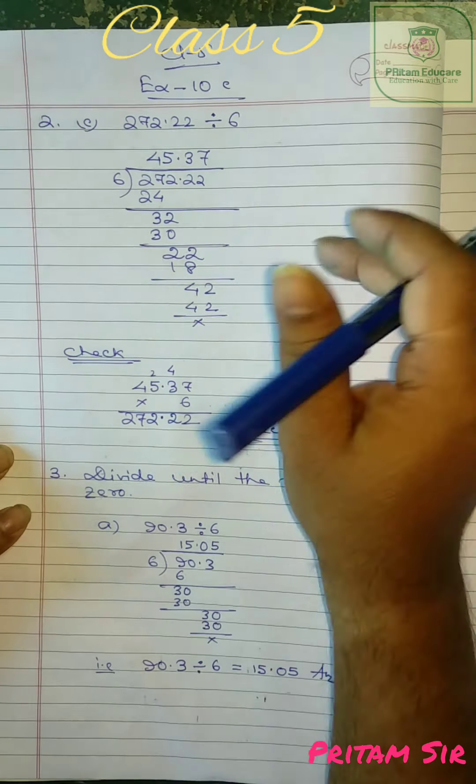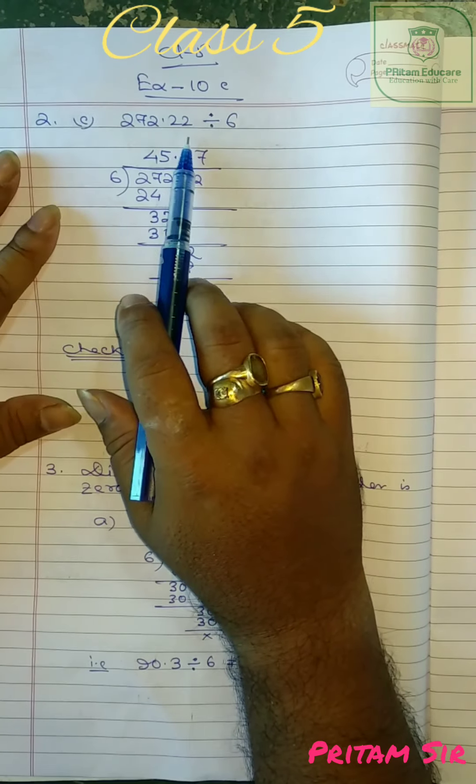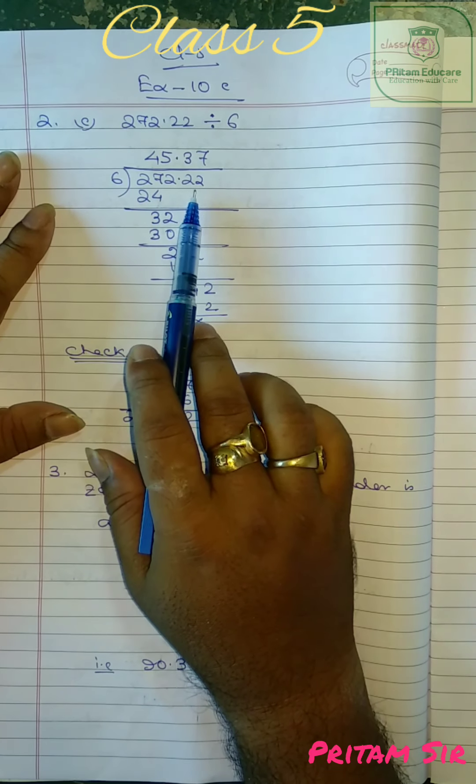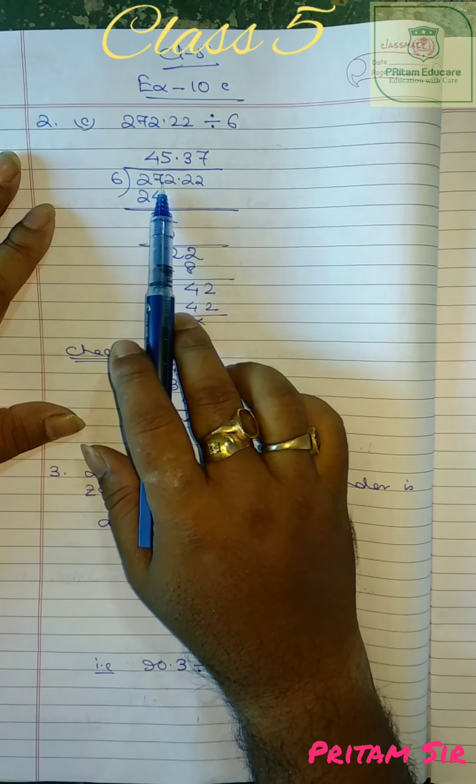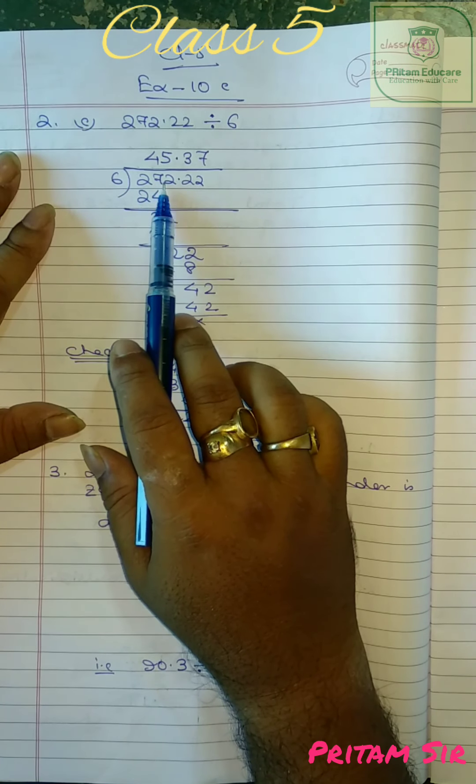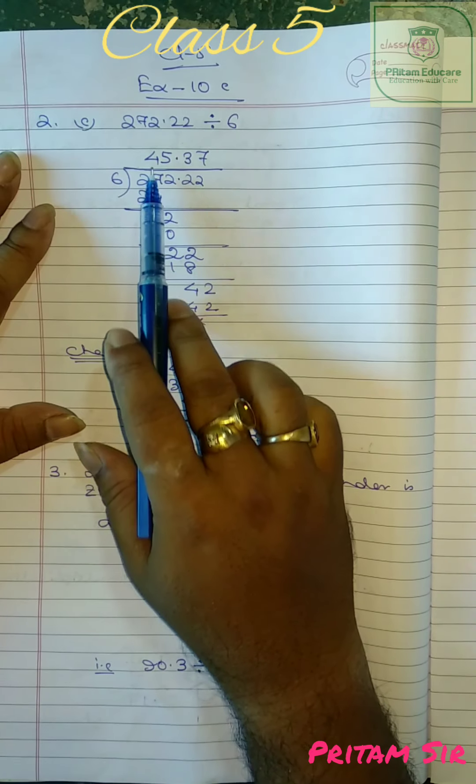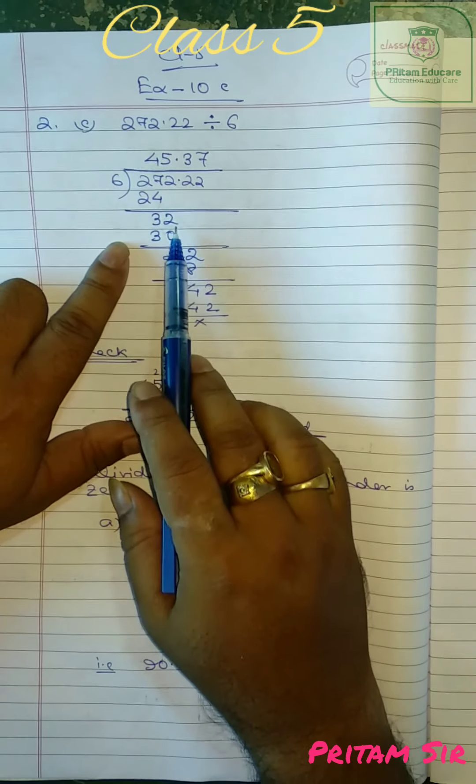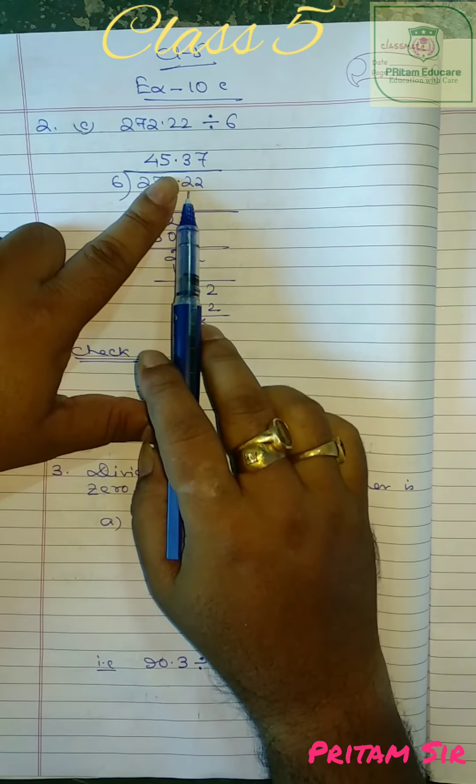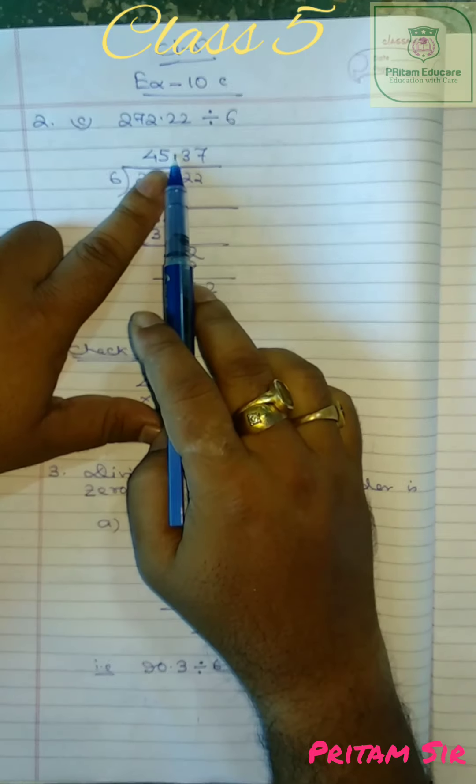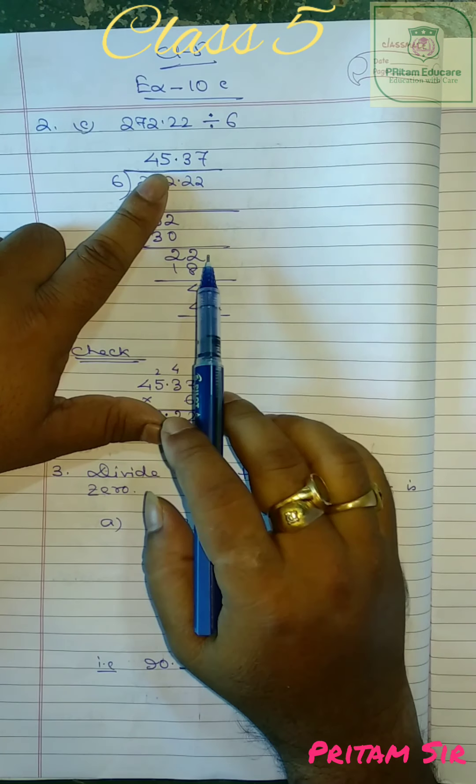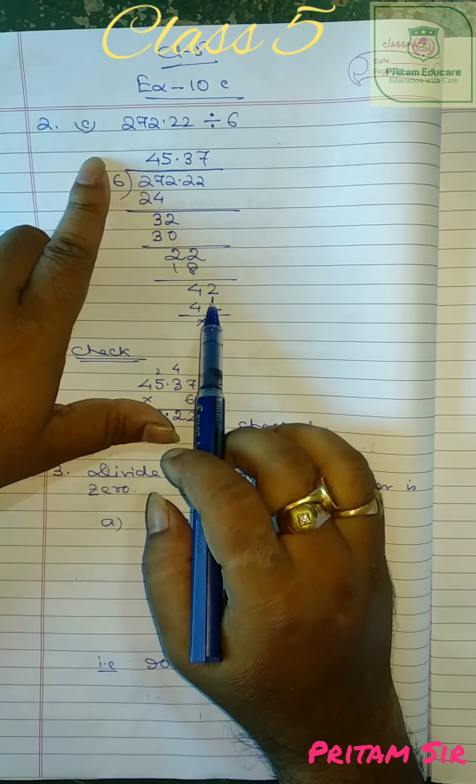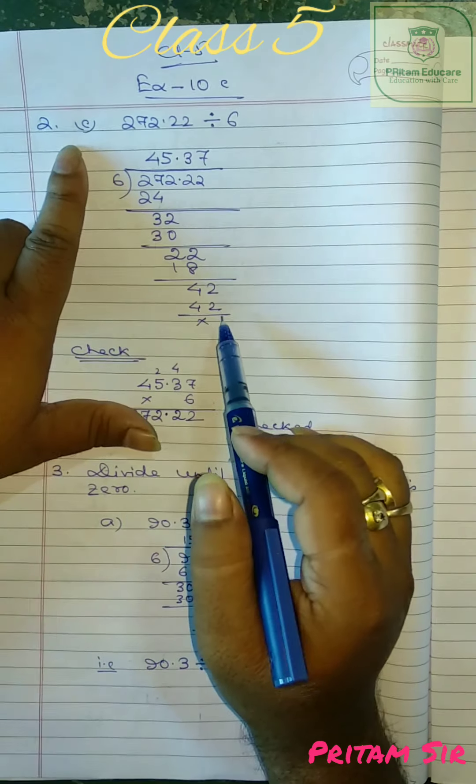Now again you see question number 2c, 272.22 divided by 6. So 6 into 272.22. See first we will take these two digits, 27. 6 into 4 is 24, 7 minus 4 is 3, then 2, 32. 5 into 6 is 32, 2 comes. Now next 2, when you will come the point will shift to here after 45.